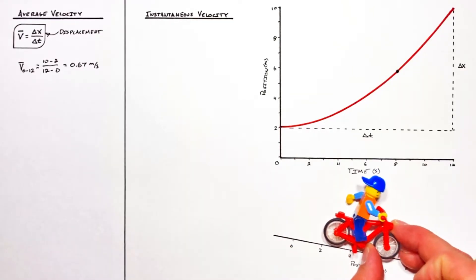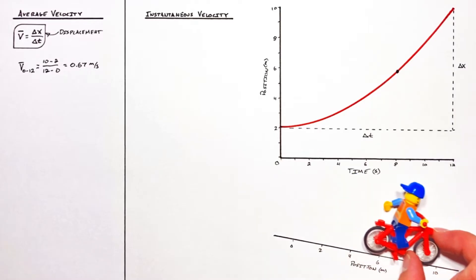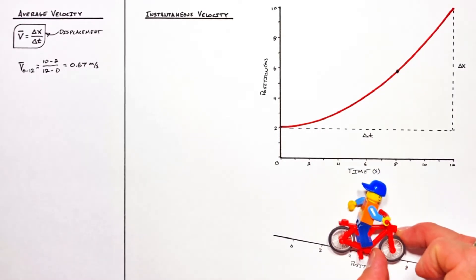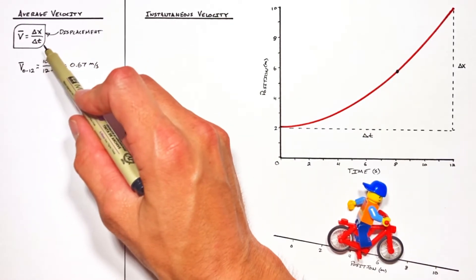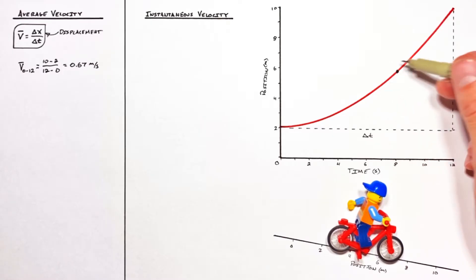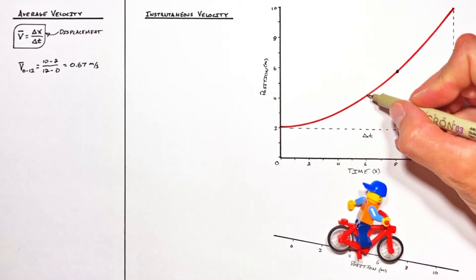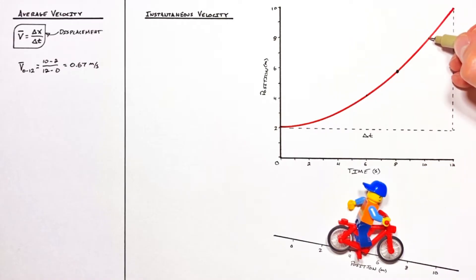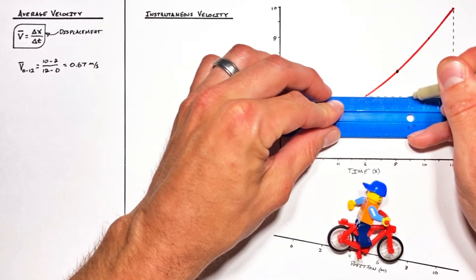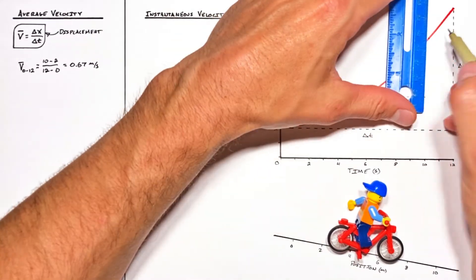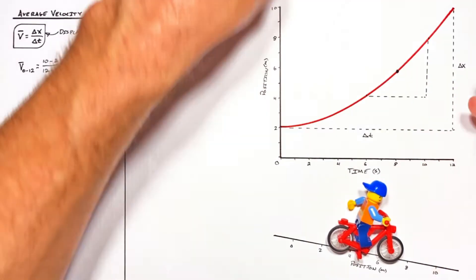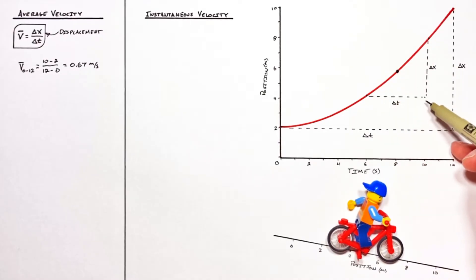Now realize that 0.67 meters per second doesn't mean that the guy is moving at the same 0.67 meters per second the whole way down the hill. That's just an average. Now we could use this average velocity equation in order to get a better picture of what's happening at this time of eight seconds, simply by looking over a period of time that's shorter. So if we were to look from a period of time of say six till ten seconds, that'd be a shorter duration of time and a smaller displacement. And that would give us a better picture of what's happening in this problem, but it would still just be an average.